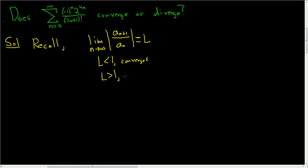If L is greater than 1, it diverges. And if L is equal to 1, we get no information from the ratio test.